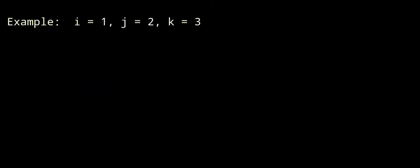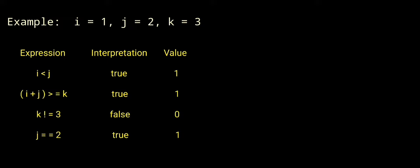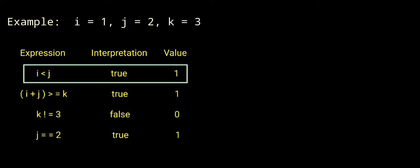Example of relational operators. Three integer variables: i with value 1, j with value 2, k with value 3. First expression: i less than j. Since 1 is less than 2, the condition is true, so the interpretation is true and the value is 1.